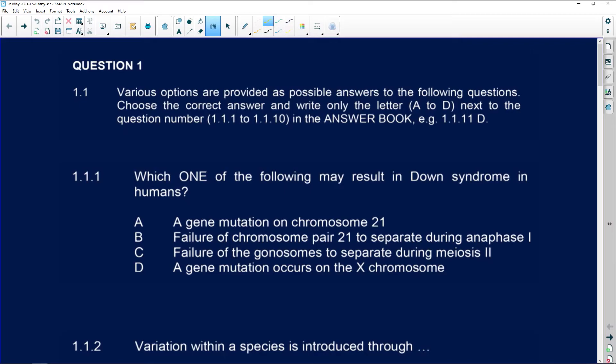Let's see what paper two has installed for us. Question one, you need to work through your multis as quickly as you possibly can. Various options are provided for possible answers. These are just multi-choices. You've done thousands of them by the time you get to matric. So look at this one. Which one of the following may result in Down syndrome in humans?